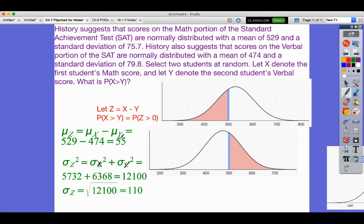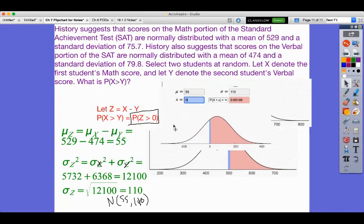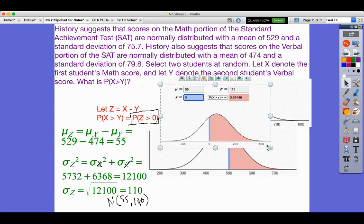And now we say, given this distribution, normal with mean of 55 and standard deviation of 110, what's the probability that Z is greater than zero? And I have that right over here. So if you take a look at this, I'll make it a little bit bigger for you.